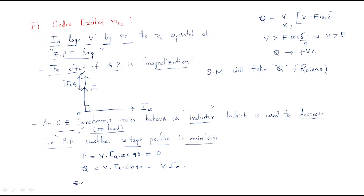Since E·cos δ is less than V, Q becomes positive — meaning the reactive power is absorbed. The reactive power is taken by the synchronous motor in under-excited no-load operation.